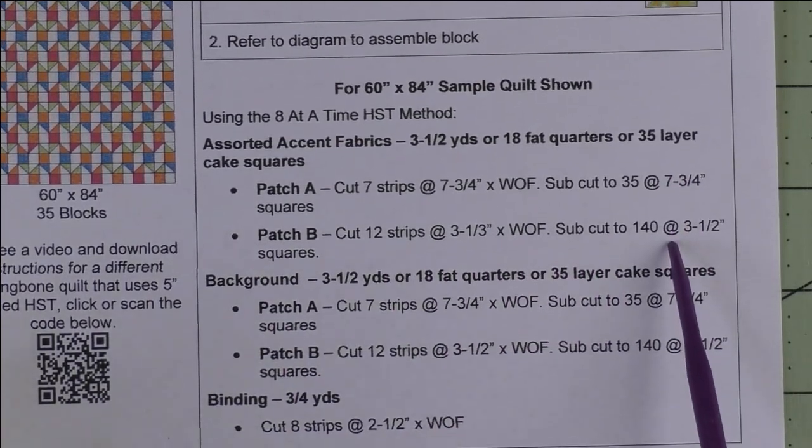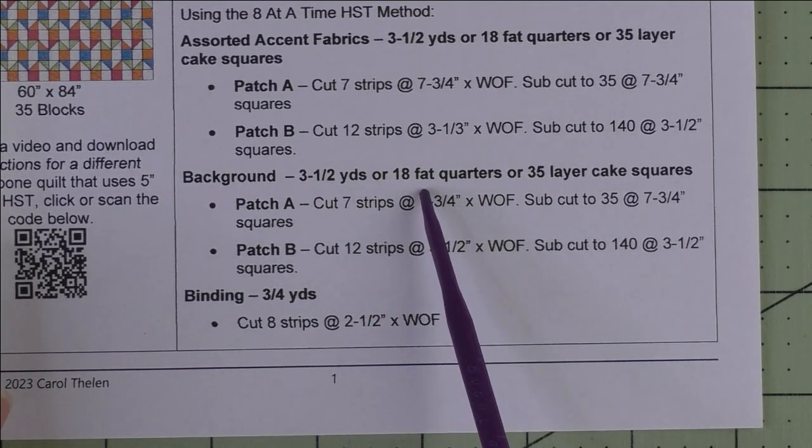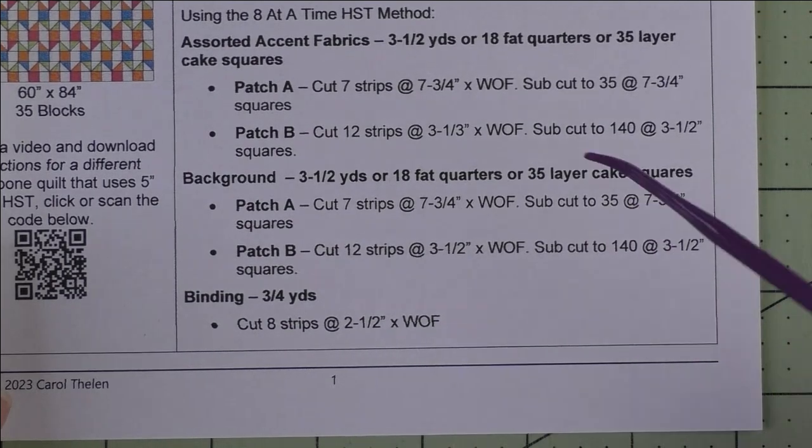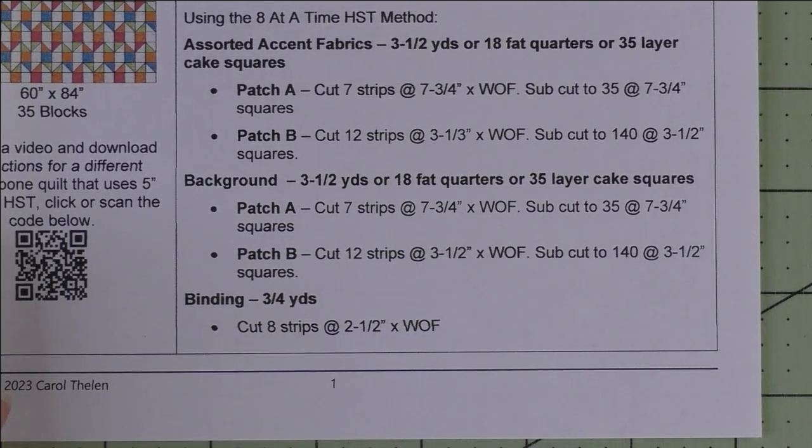Same thing with the background. You'll need three and a half yards and either 18 fat quarters or 35 layer cake squares. It's exactly the same cutting for each one. Then the binding, you'll need eight strips at two and a half inches.